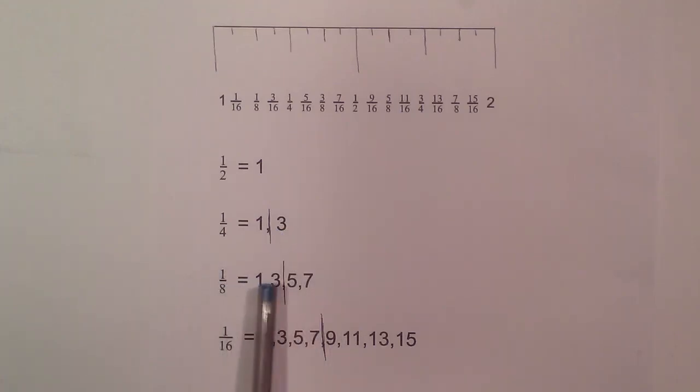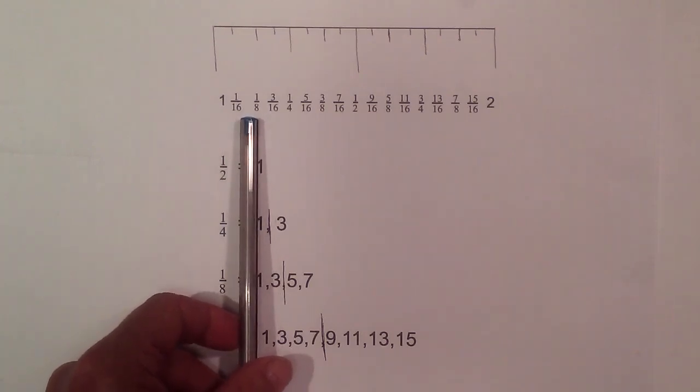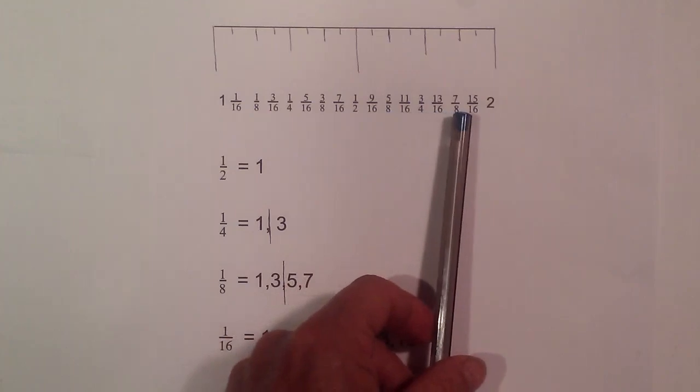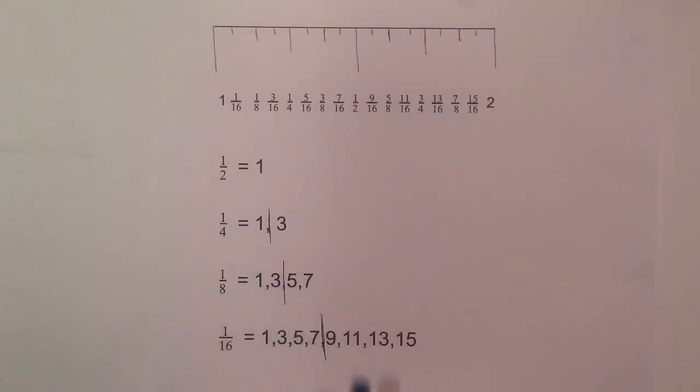And now with eight, it goes one, three, five, seven. So you have one, three, five, seven eighths. That's easy to memorize. One, three, five, seven.